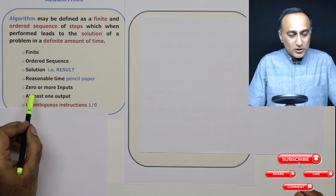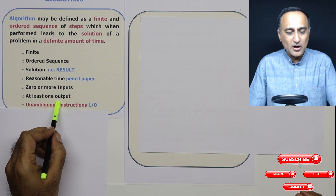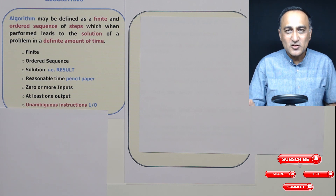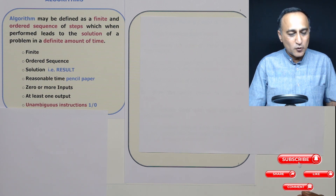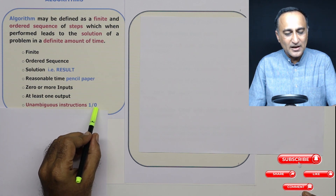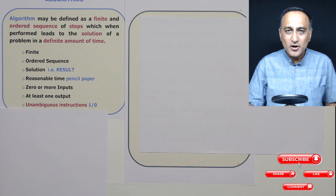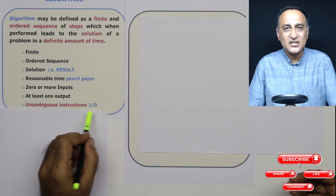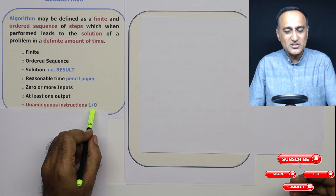An algorithm may have zero or more inputs, but almost certainly it is going to have at least one output. In the algorithmic approach, when you give instructions or steps, the steps should not be ambiguous. For example, the algorithmic approach cannot have a step to find the solution to something like one divided by zero, because one divided by zero has no solution. You cannot expect to solve something like that through the algorithmic approach.